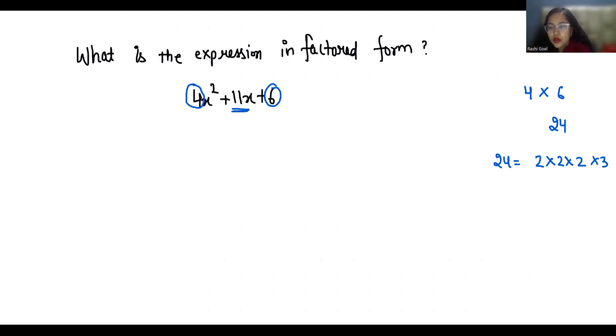Now 2 times 2 times 2 is 8 plus 3. 8 plus 3 is 11 and 8 times 3 is 24. So that's what we want.